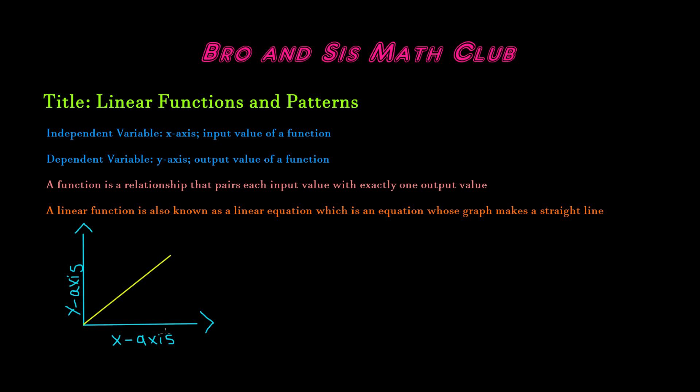So here we have a graph with the x-axis and y-axis, which is the independent variable and the dependent variable. This line shows the graph of a linear equation because a linear equation always has a graph that makes a straight line. So it's going constantly upwards.